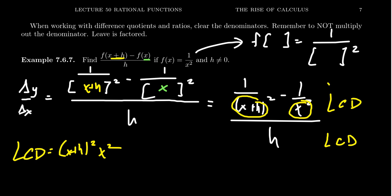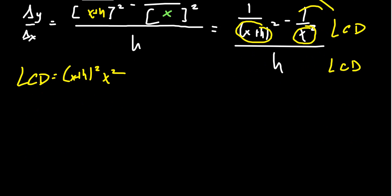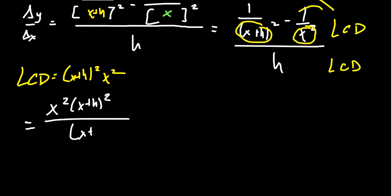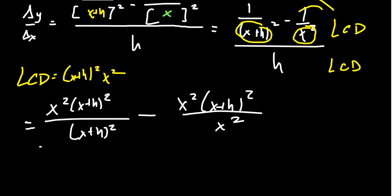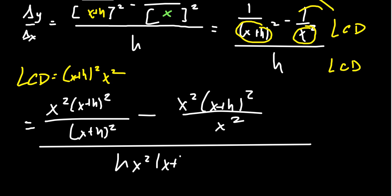On the top, since you have a difference, you're going to distribute. You'll end up with x² times (x+h)² over (x+h)², subtract x squared over (x+h)² over x², all sitting above h times x² times (x+h)². In the denominator, do not multiply it out — leave it factored. Denominators should always be left factored. You'll see that the (x+h)² cancels and x² cancels in the baby fractions.